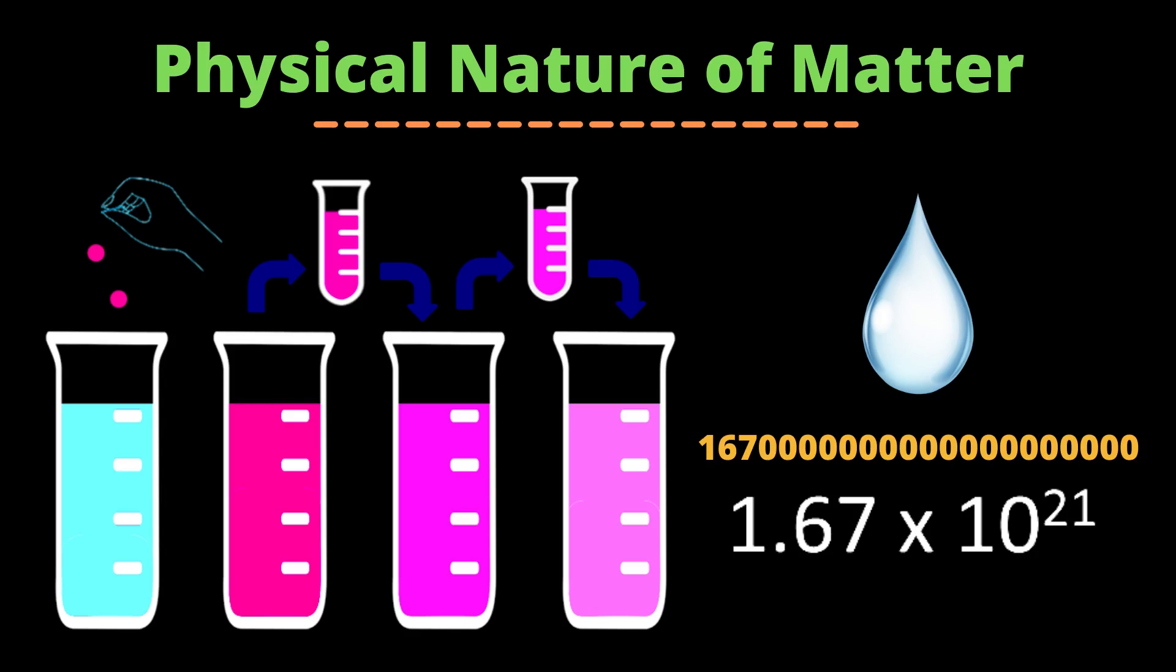Dilute it like this repeatedly and observe the color. We can observe that with the dilution, purple color of the solution is becoming lighter, but it is still visible. It happens so because potassium permanganate consists of millions of tiny particles, which kept on dividing into smaller particles with repeated dilution, keeping the purple color of the solution intact.